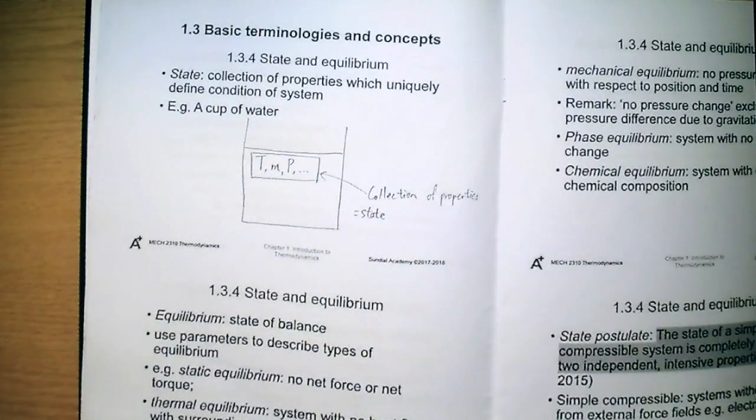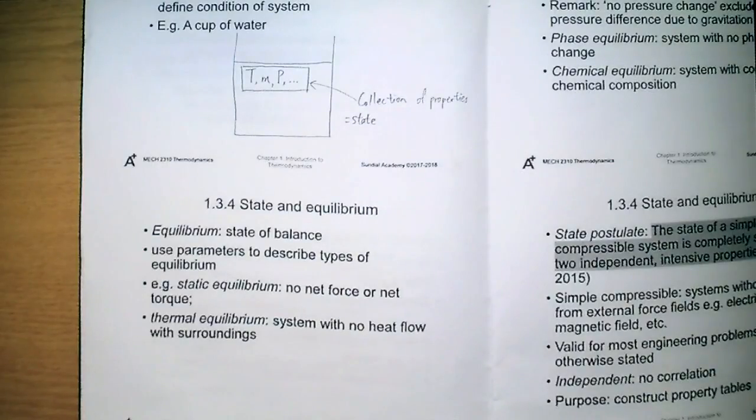After that, we would talk about equilibrium. The word equilibrium describes a state of balance. Parameters are used to describe the types of equilibrium in the state. There are some kinds of equilibrium that you may have seen in your elementary physics course. For example, static equilibrium, which describes a system that has neither net force nor net torque.